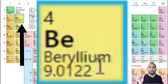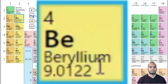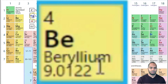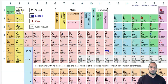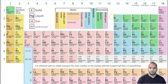Let's try beryllium. How many protons? Four. How many electrons? Four. The periodic table is organized by the number of protons, also known as the atomic number. The periodic table goes from left to right: hydrogen, helium, lithium, beryllium, boron, carbon, and so on.